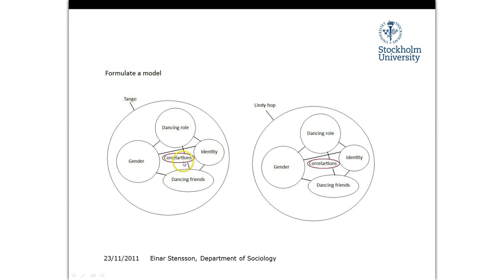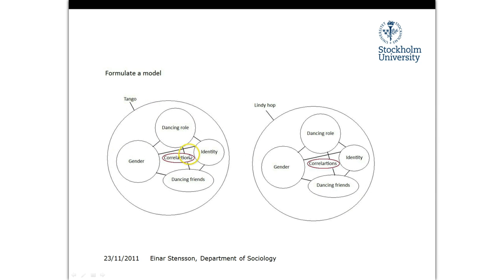I would use different types of correlation measures to correlate them and see how they're linked together. And finally, I could even put them all in the same index and compare tango dancing to Lindy Hop for a different value, or compare the identity of tango dancers to the identity in Lindy Hop and the role that gender plays in identity across the different dances.